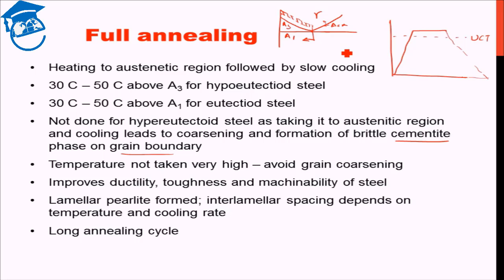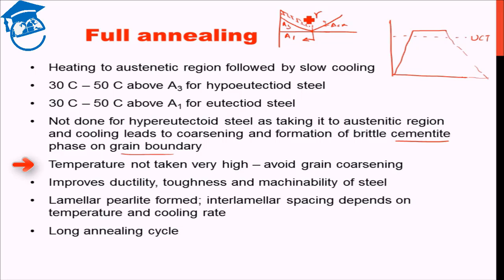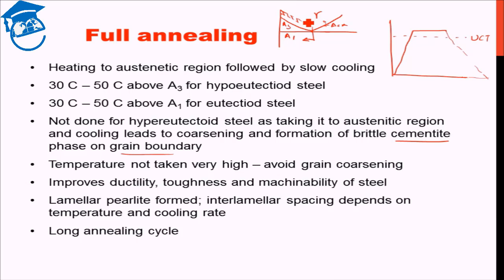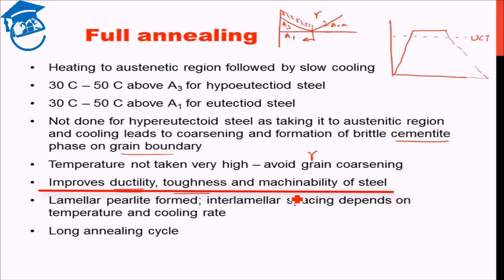Therefore for hyper-eutectoid steel we do not use the full annealing cycle — we prefer partial annealing instead. Even for hypo-eutectoid steel we do not go to very high temperatures, such as 100 degrees Celsius above A3, in order to avoid grain coarsening. If we go to very high temperature the gamma grains will coarsen, giving a coarse resultant microstructure. The advantages of full annealing are that it improves ductility, toughness, and thereby the machinability of the steel.